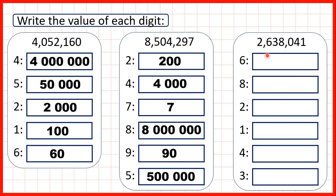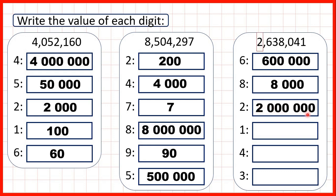Now we have two million six hundred and thirty-eight thousand and forty-one. The six is in our hundred thousands so that's six hundred thousand — six with five zeros on the end because we have five digits after the six. The eight is in our thousands so that's eight thousand. The two is in our millions so that's two million, two with six zeros on the end. The digit one is in our ones place value so that just represents one.